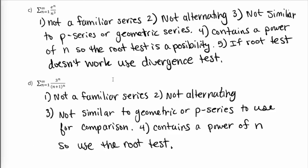In example part c, we have the series e^n over n³. It's not a familiar series, not alternating, and not similar to a p-series or geometric series. But at step 4, it does contain powers of n, so it might be best to try the root test. That's where I would start.